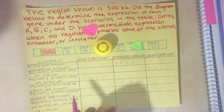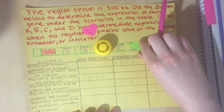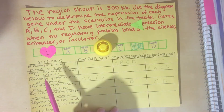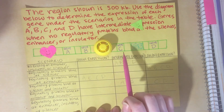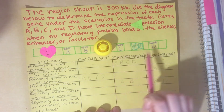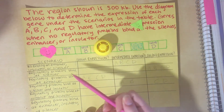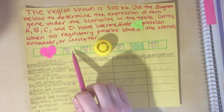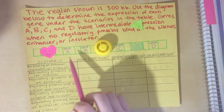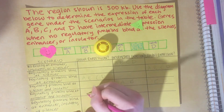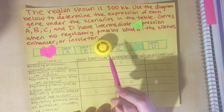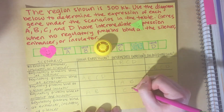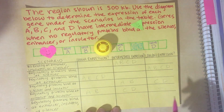The next scenario looks at regulatory proteins bound at the enhancer and the insulator — the flip of what we just discussed. The enhancer is active, but the insulator protein is blocking it from working on the genes on the other side of it. So genes C and D are prevented from being worked upon by the active enhancer, while the active enhancer still has access to genes A and B. Genes A and B will have high expression. Because the active insulator blocks the enhancer from working on genes C and D, genes C and D still have just intermediate expression, and there is no low or no expression for any genes.